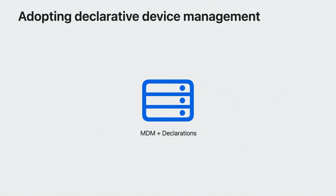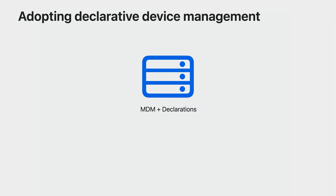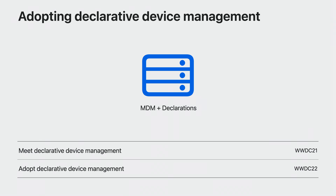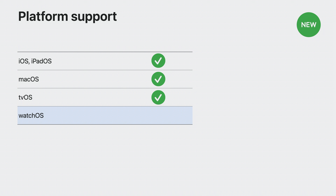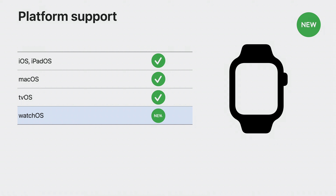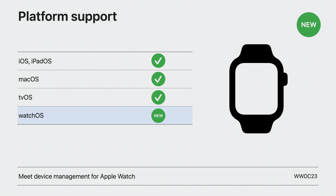Several MDM developers have already implemented and shipped MDM servers with declarative device management support. With the new features in this release, even more will want to do so to provide their customers with an enhanced management feature set. Please review the sessions from WWDC21 and WWDC22 for an in-depth look at what declarative device management is and how to adopt it in your products. A quick update on platform support: MDM and declarative device management are now available for watchOS. Full details can be found in the session Meet Device Management for Apple Watch.